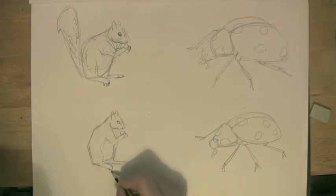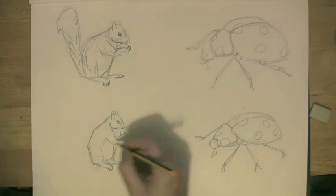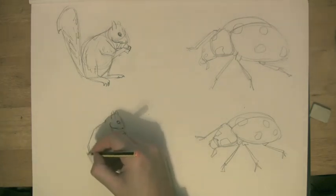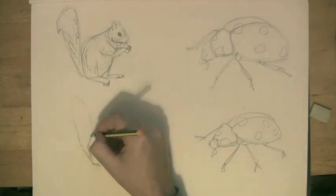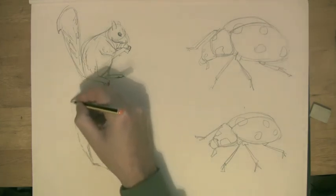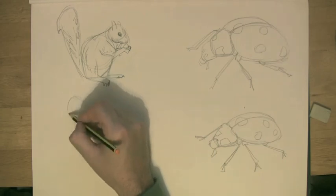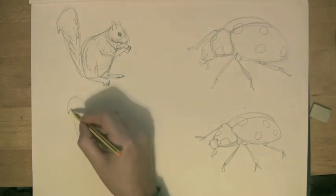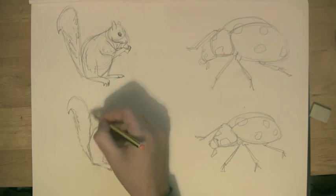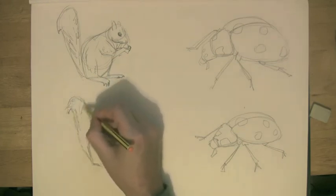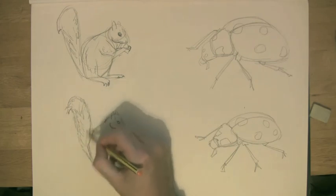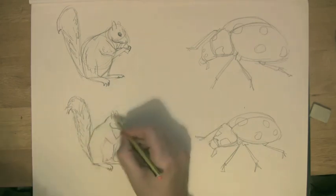Add a few claw details there and the same on the other foot. Nothing too detailed, just little indications of where the claws are. And of course the big bushy squirrel tail which as I said before is almost like a giant exclamation mark or balloon sausage, but on the end I'm going to just draw a little hook there to give the flow of the tail.